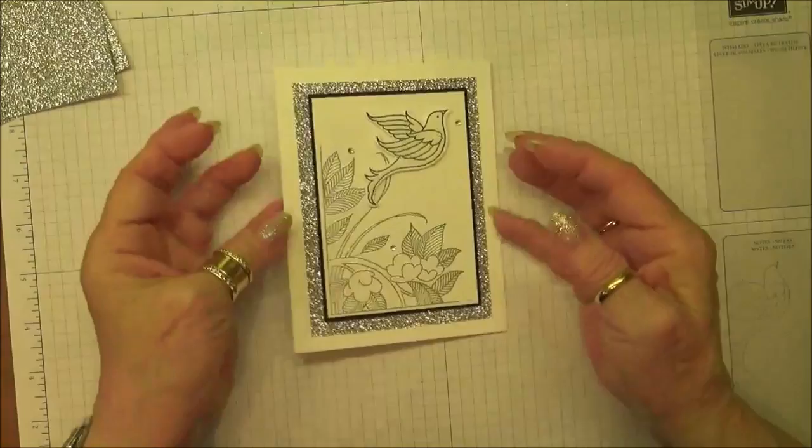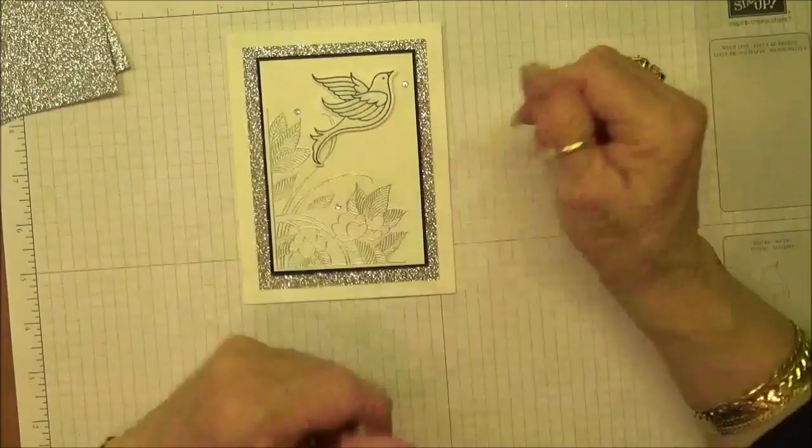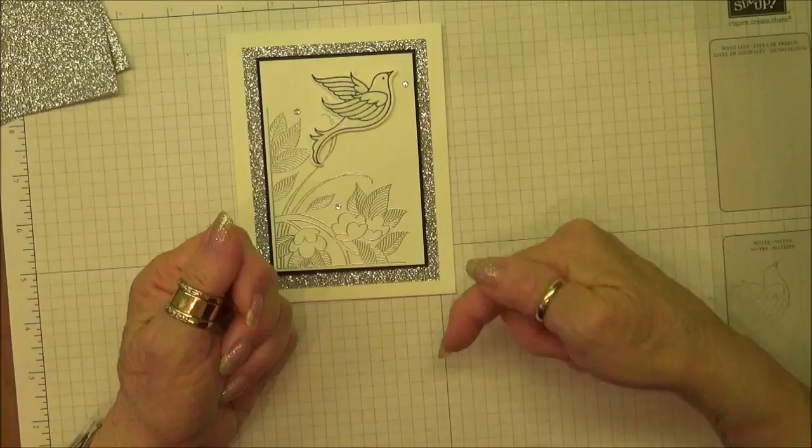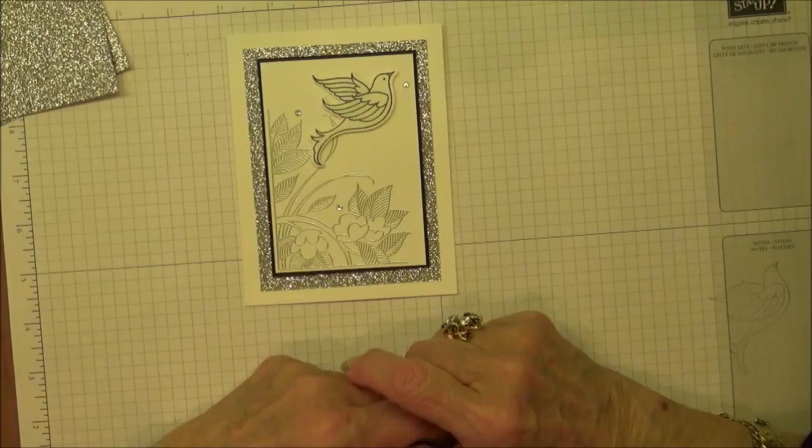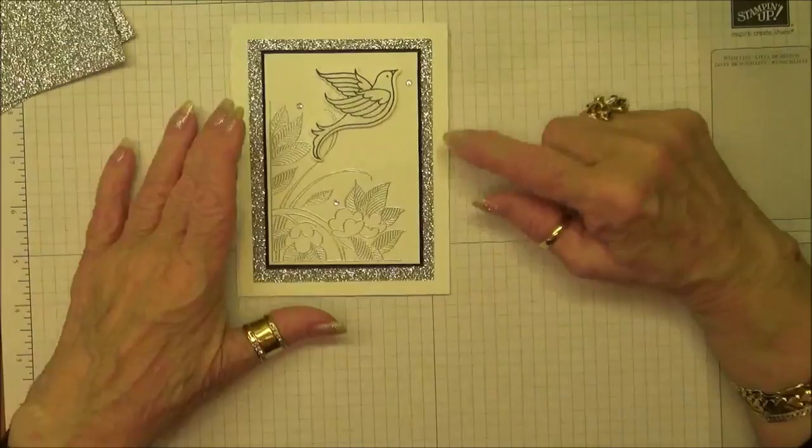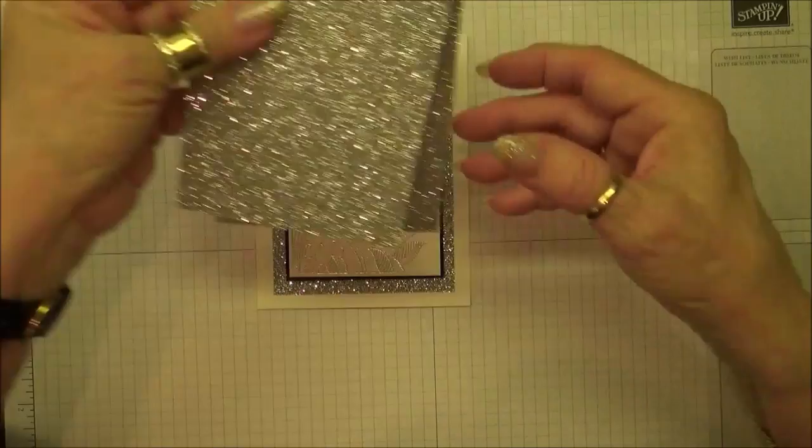So let's get started. A couple of things I wanted to point out - all of the measurements for the card you will find on my blog at kathleenstamps.com. There'll be a link below the video. We'll take you there for all of the different products I used and any information you might need. If you want to purchase these items, there will be links you can click on.